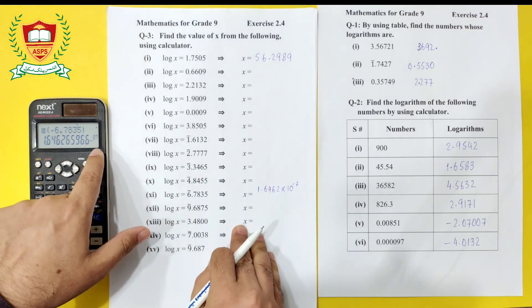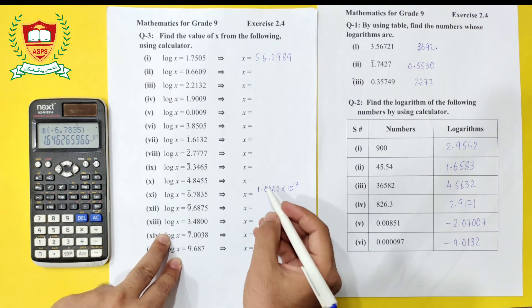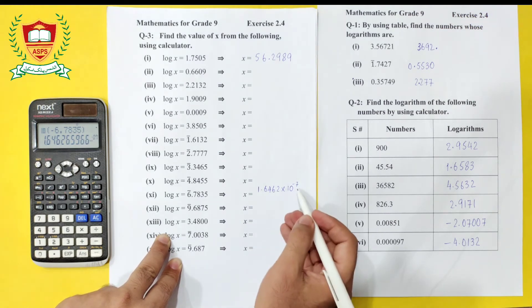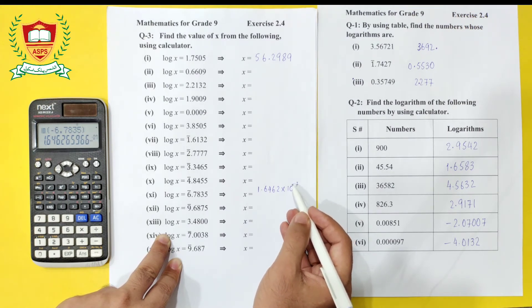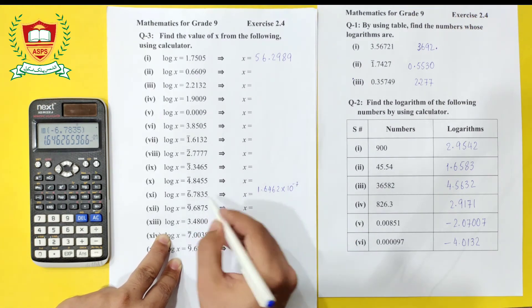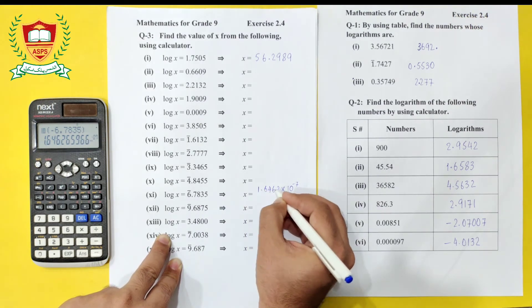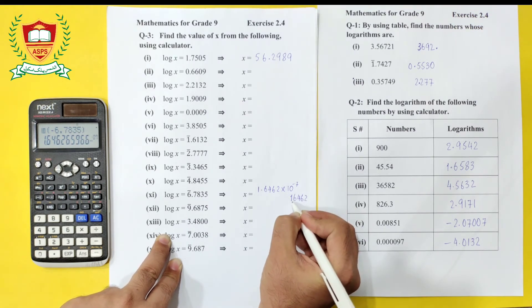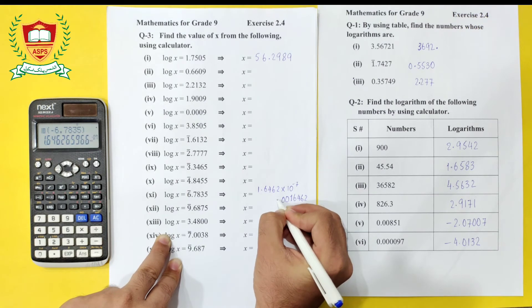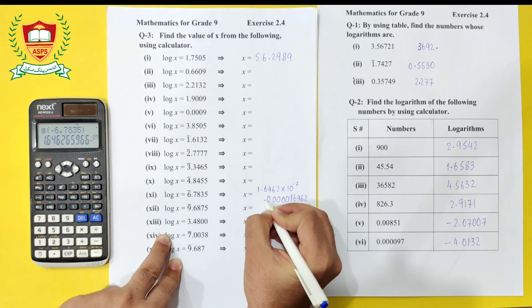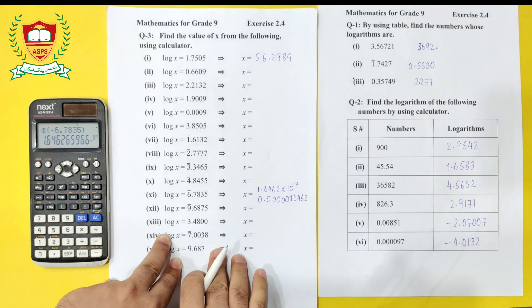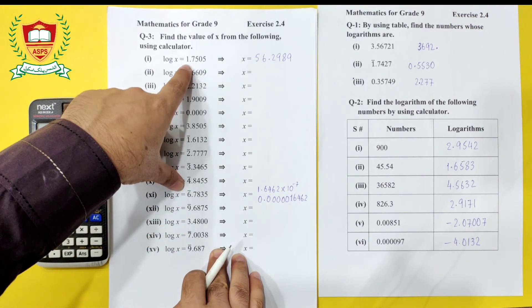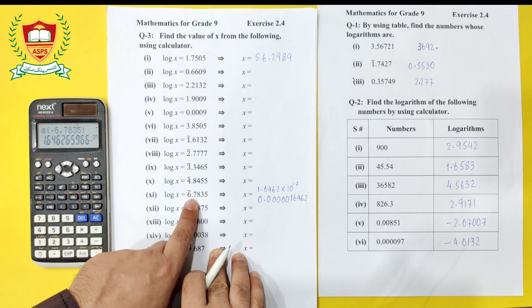The calculator displays the answer in scientific notation: 1.6462 × 10^(−7). To write this in ordinary form, we move the decimal point 7 digits to the left. Writing the digits 1, 6, 4, 6, 2 and moving the point 6 places left, then placing 0 before it. One question had a positive characteristic and another had a negative characteristic — both have been demonstrated.